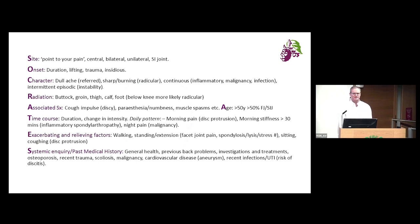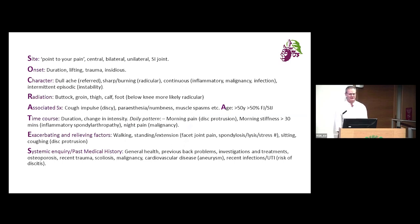First of all, you ask the patient to point to where their pain is — that's probably one of the most helpful physical signs. Is it central, bilateral, unilateral, or over the sacroiliac joint? There's a test called Fortin's finger test, where pointing to the sacroiliac joint is indicative of sacroiliac joint pain.